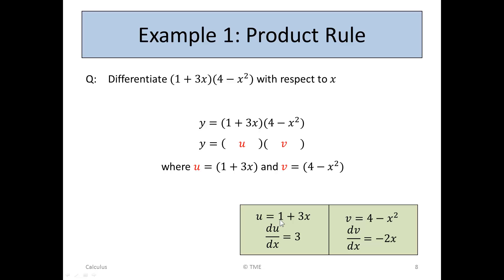If u = 1 + 3x, we can get du/dx. Differentiating a constant gives 0, and differentiating 3x gives 3, so du/dx = 3. Similarly, for v = 4 − x², differentiating the constant gives 0, the minus stays; for x², the 2 comes down to give 2x, and 2 minus 1 is 1, so x to the 1 is just 2x. Therefore dv/dx = −2x. So in this table we have done our substitutions for u and v and calculated du/dx and dv/dx.